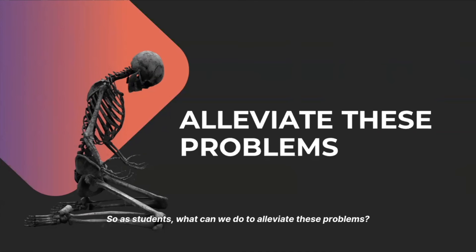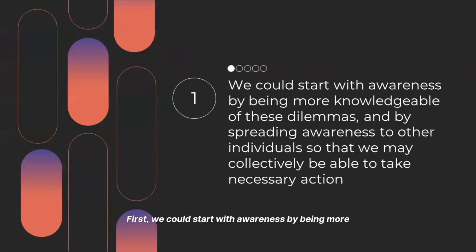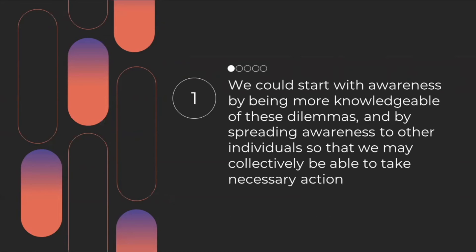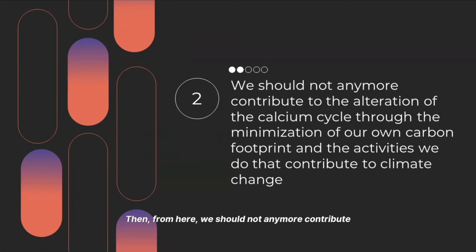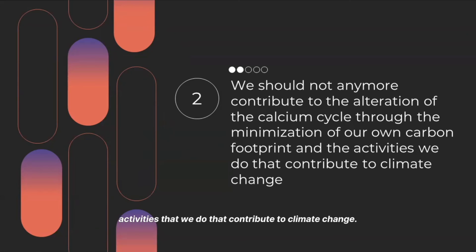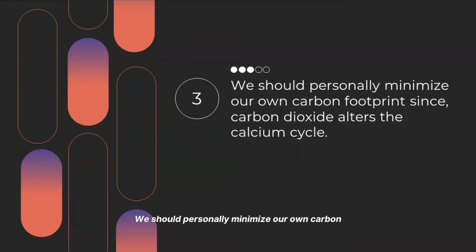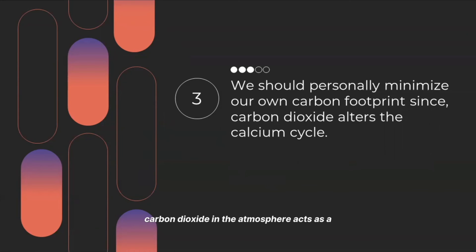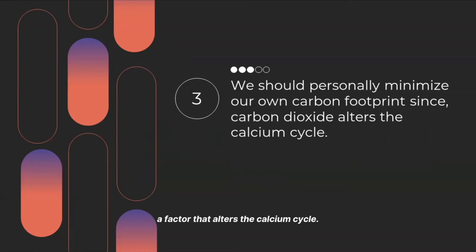So, as students, what can we do to alleviate these problems? First, we could start with awareness by being more knowledgeable of these dilemmas and by spreading awareness to other individuals so that we may collectively be able to take necessary action. We should not contribute to the alteration of the calcium cycle through the minimization of our own carbon footprint and the activities that contribute to climate change. We should personally minimize our own carbon footprint since carbon dioxide alters the calcium cycle. Moreover, increased carbon dioxide in the atmosphere acts as a greenhouse gas that contributes to climate change, which is one of the many causes of desertification, a factor that alters the calcium cycle.